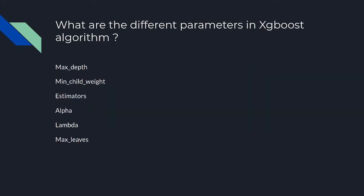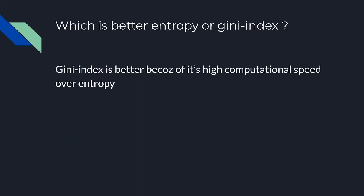Next question: what are the different parameters in the XGBoost algorithm? Popular boosting algorithms include CatBoost, LightGBM, and XGBoost. The parameters in XGBoost include all decision tree parameters such as max depth, minimum child weight, number of estimators, alpha, lambda, and max — similar to those in a decision tree.